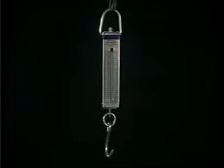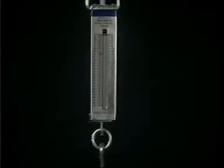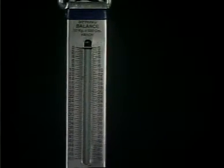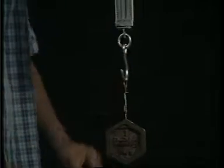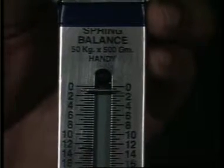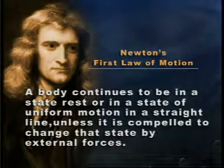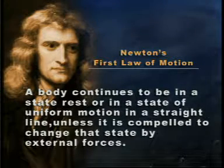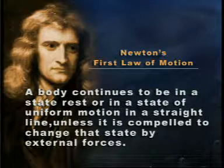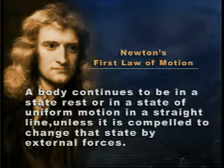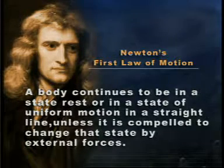The three laws of motion can be studied in the mechanical system of a spring balance used to determine the weight of objects. When not in use, the pointer rests at zero. It continues to rest at that point until it is made to change that position by the application of an external force such as a one kilogram weight. The external force of the weight makes the pointer move in the direction of the force applied. This movement is as per Newton's first law of motion, which states that a body continues to be in a state of rest or uniform motion in a straight line unless compelled to change that state by external forces. Thus, Newton's first law gives the definition of force.